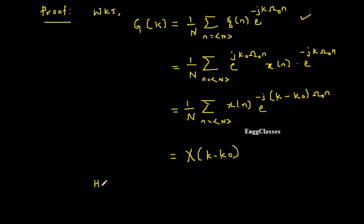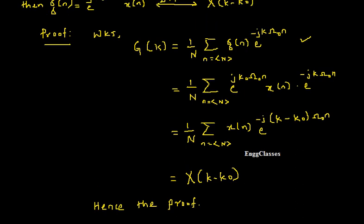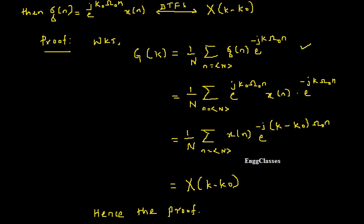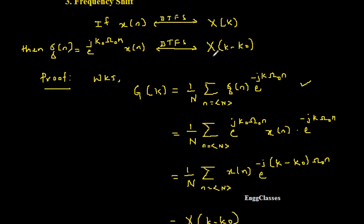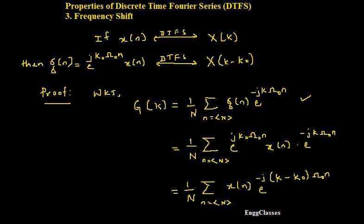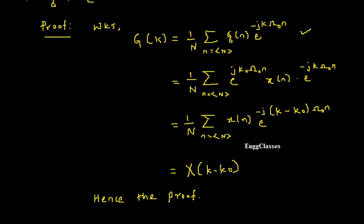Hence the proof is complete. As I said, this is one of the very simplest proofs, but the key is to understand each and every step and remember the statement so that we can derive the expression. I have explained the derivation for the frequency shift property step by step. I hope you have understood. If there are any doubts, please let me know in the comment section and I will definitely address them. Meanwhile, subscribe to our channel NG Classes for more videos in signals and systems. Thank you everyone for watching.